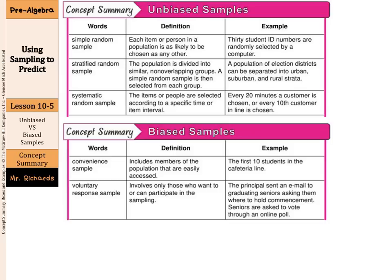Let's compare that to a stratified random sample. The population is divided into similar, non-overlapping groups, and a simple random sample is then selected from each group. For example, a population of election districts can be separated into urban, suburban, and rural strata, or a school separated into separate grades.